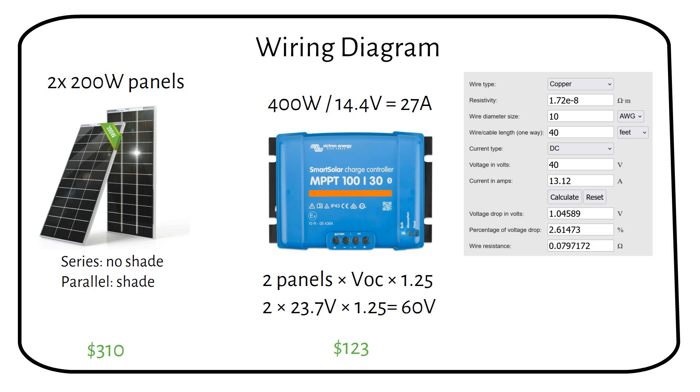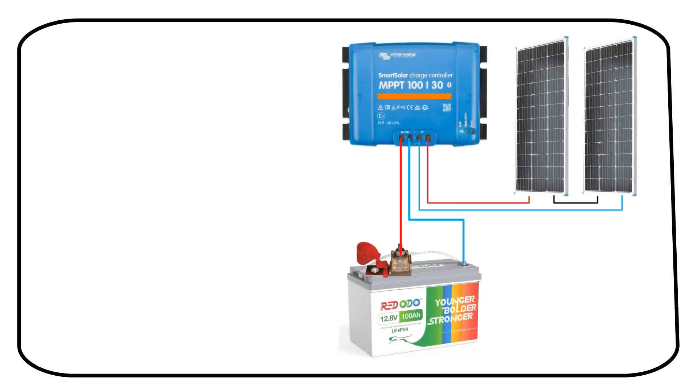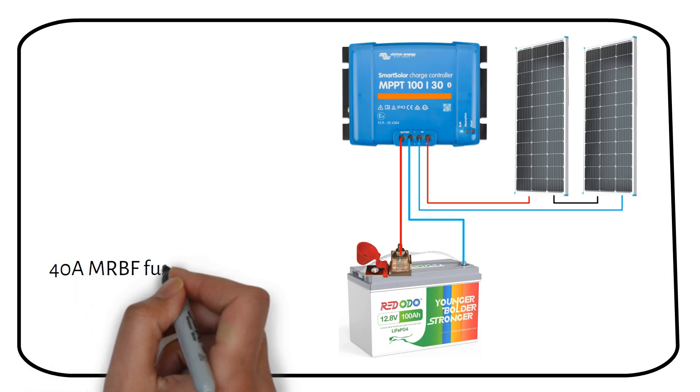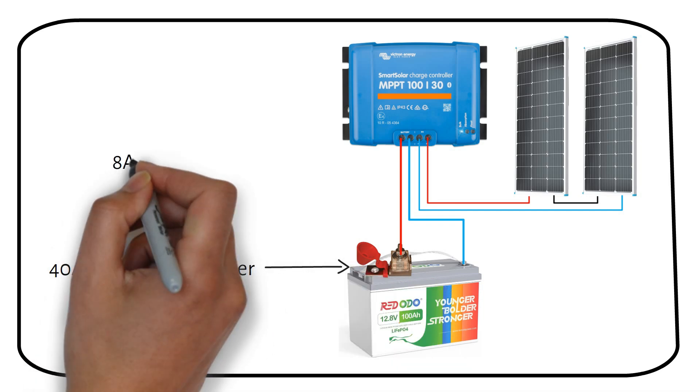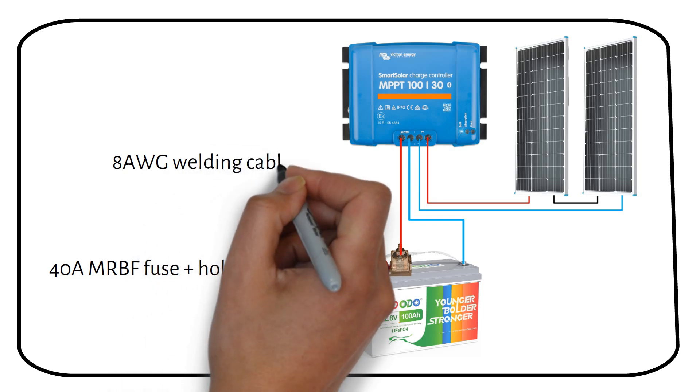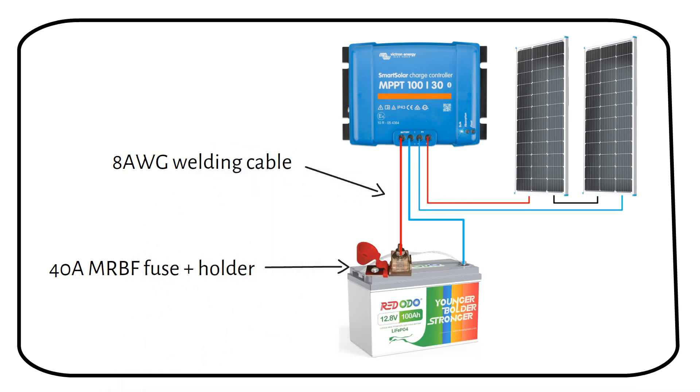Assuming the wire length from the solar panels to the charge controller is 40 feet, we will need a 10 gauge solar cable, which will cost you $60. And this is the diagram. We will also need a 40 amp fuse, which will be mounted on an MRBF fuse block using an 8 gauge welding cable. I will link all the components in the description.